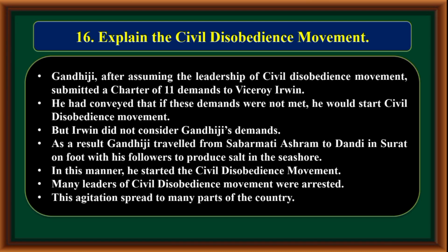Explain the Civil Disobedience Movement. Gandhiji, after assuming the leadership of the Civil Disobedience Movement, submitted a charter of 11 demands to Viceroy Irwin. He had conveyed that if these demands were not met, he would start the Civil Disobedience Movement. But Irwin did not consider Gandhiji's demands. As a result, Gandhiji traveled from Sabarmati Ashram to Dandi in Surat on foot with his followers to produce salt at the seashore. In this manner, he started the Civil Disobedience Movement. Many leaders were arrested and the agitation spread to many parts of the country.